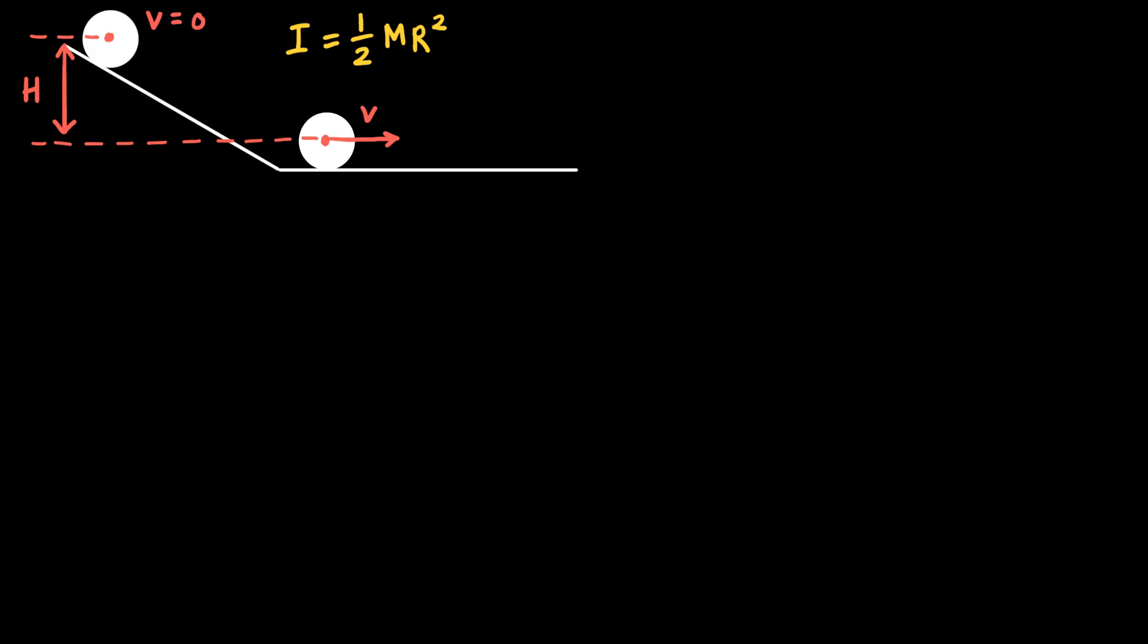It's going to be released from rest from the top of this inclined plane, and it's going to roll without slipping down the inclined plane of vertical distance h. So the center of mass of the cylinder has traveled a vertical distance h when it reaches that horizontal plane at the bottom. And my question is, given these circumstances, what will be the linear speed v when it reaches the bottom of the inclined plane?